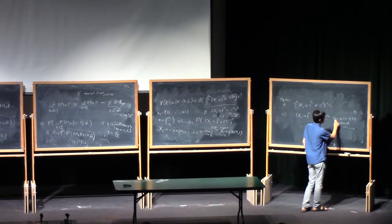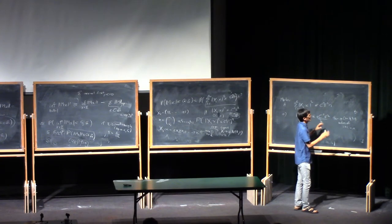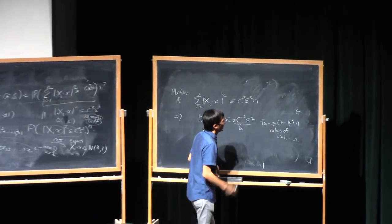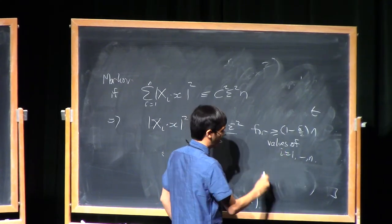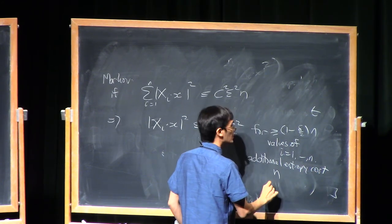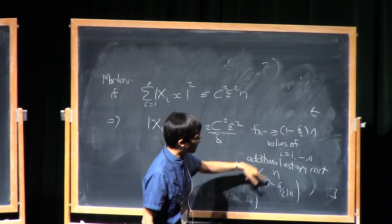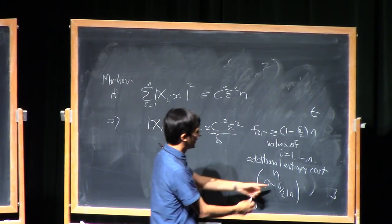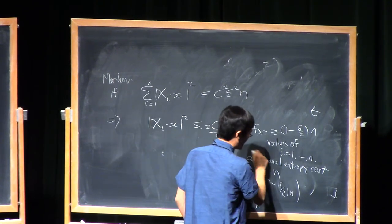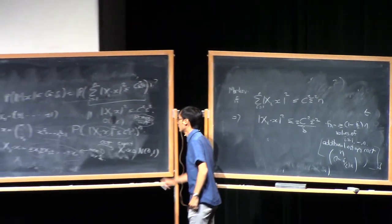Markov's inequality tells you that most of the values are bounded, but it doesn't tell you precisely which values are bounded. Of the numbers one to n, there are 1 minus delta over 2 times n of them which are bounded, but you don't know which ones. Because you don't know which ones, you have to apply the union bound one more time, and there's an additional entropy cost of n choose (1 minus delta over 2) n. This is the number of ways you can choose the indices, which is big. When you run the argument properly, this is extra cost you have to take care of. But when delta is small, this turns out to not be too bad — you can absorb it in the losses you have here. This is how you deal with the first problem of not having uniform control.